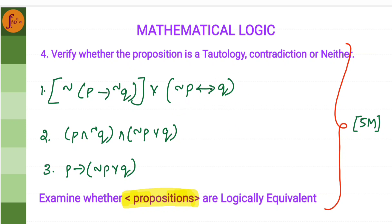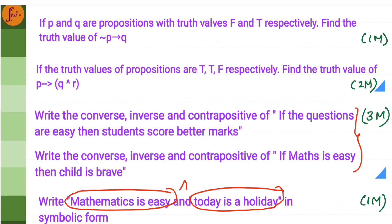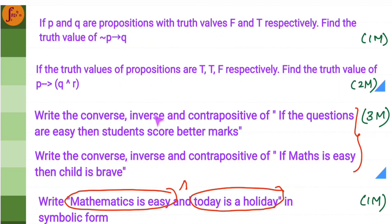In the 3 marker section, you will be given a proposition and you have to find the converse, inverse, and contrapositive. This is an easy scorer. You don't have to do any calculations or remember any formulas — you just have to know how to arrive at the converse, inverse, and contrapositive.